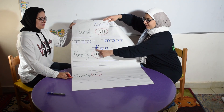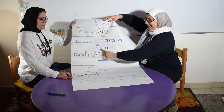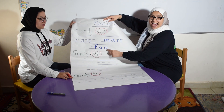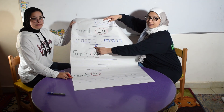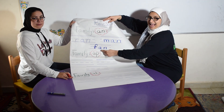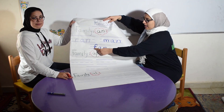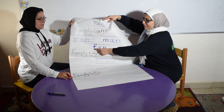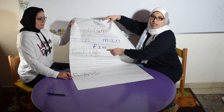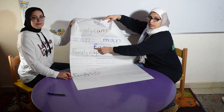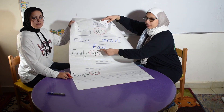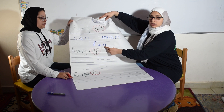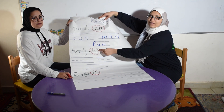Now we have F, A, N. Fan. F, A, N. Fan. Again please. Fan. How can we read this word? F, A, N. Fan.